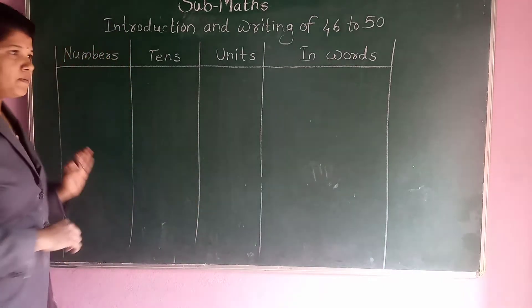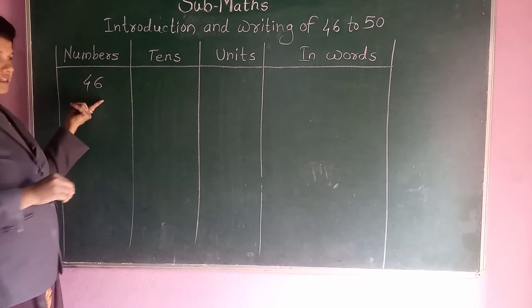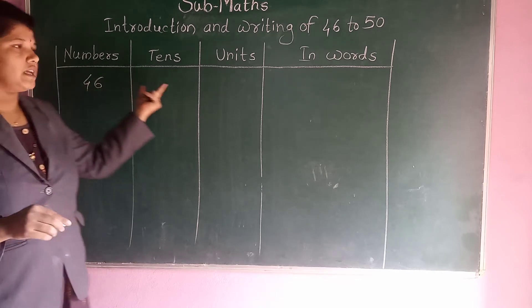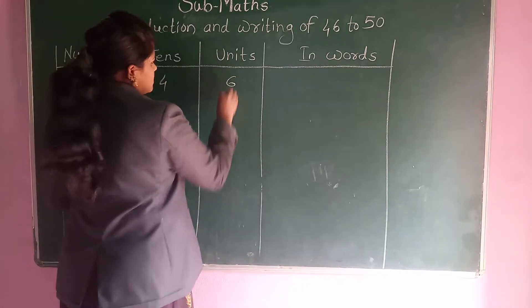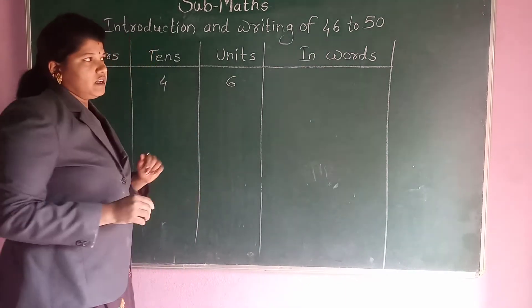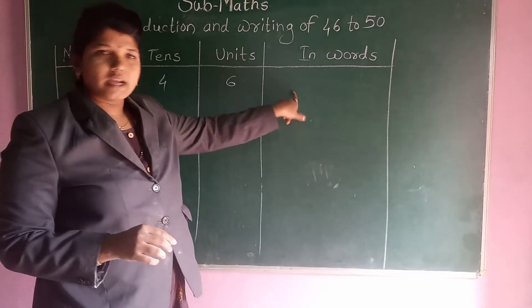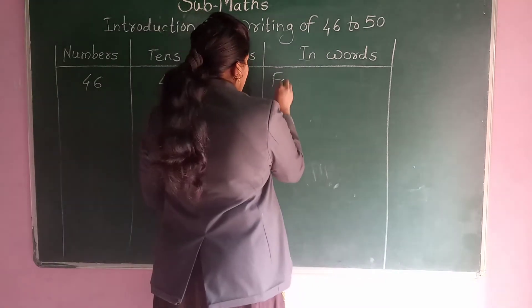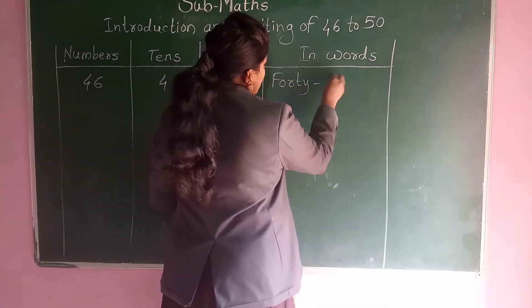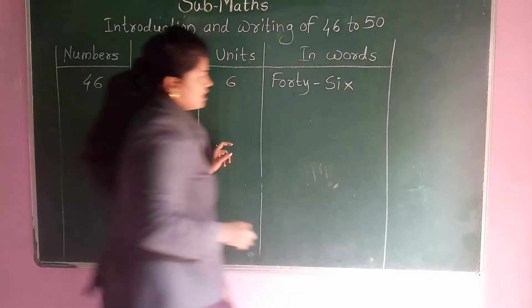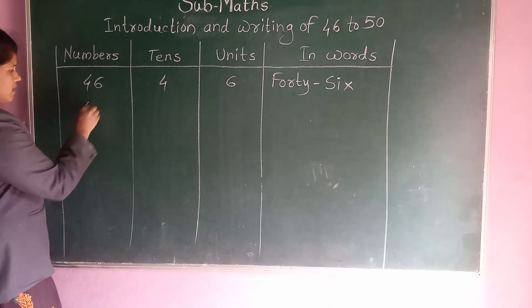So first, write 46 in figure: 46. This number's tens and units — 4 is the tens and 6 is the unit. And in words, 46 is written as FORTY SIX — F, O, R, T, Y, S, I, X.